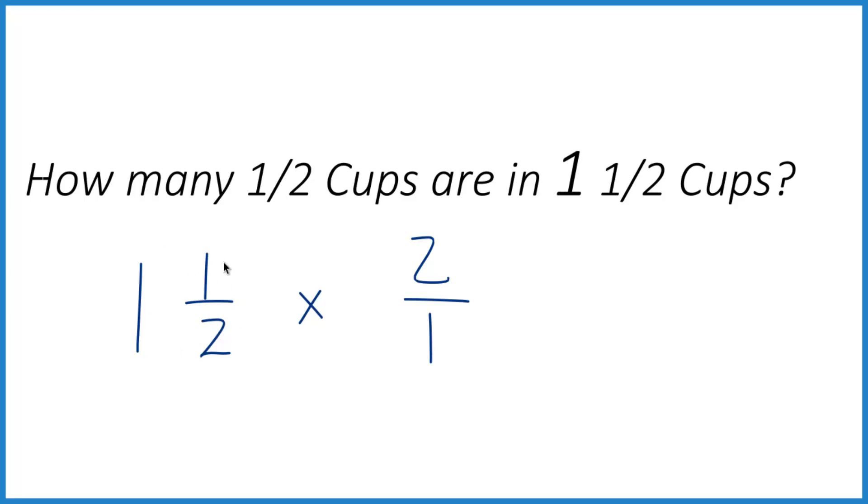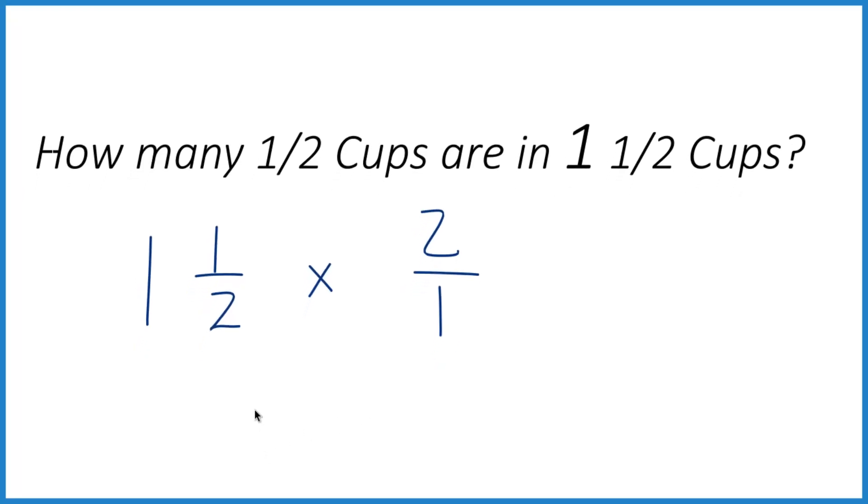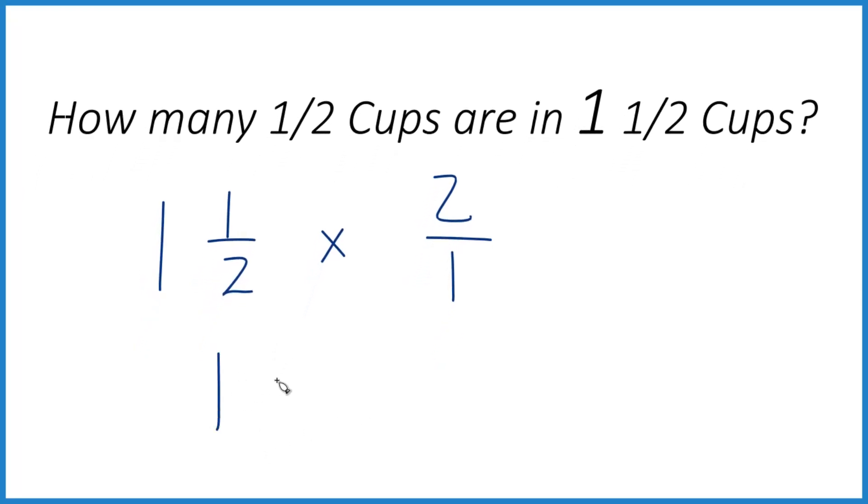But then we have this mixed number here. So let's change that to the same format as this two-over-one. The way we do that is we would say one-and-one-half, one times two plus one. That gives us the three. We keep the two the same. So one-and-one-half and three-halves are the same thing.